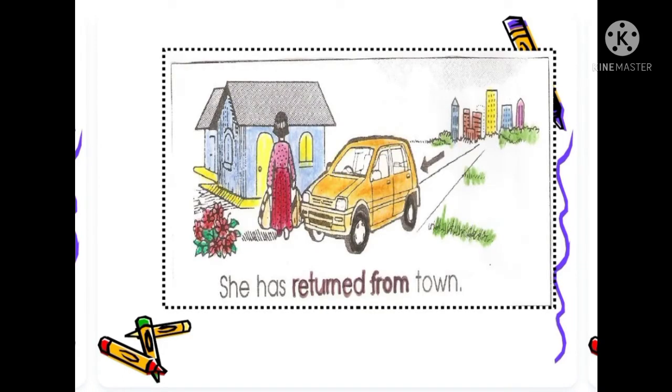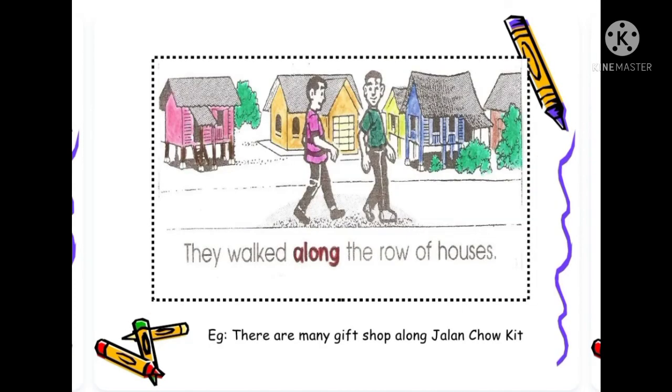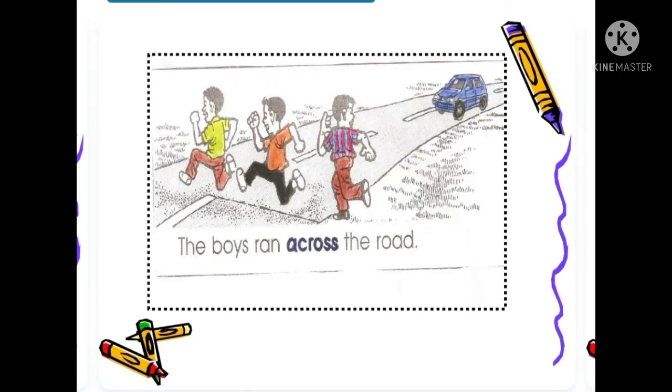Another example: she has returned from town. They walked along the row of houses. The boys run across the road.